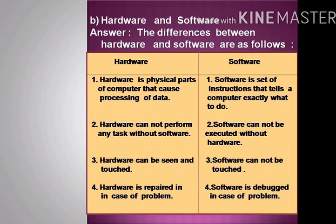Question B: Hardware and Software. The differences are as follows. Hardware is the physical parts of a computer that cause processing of data, but software is a set of instructions that tells a computer exactly what to do. Hardware cannot perform any tasks without software, but software cannot be executed without hardware. Hardware can be seen and touched, but software cannot be touched. Hardware is repaired in case of a problem, but software is debugged in case of a problem.